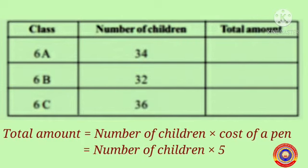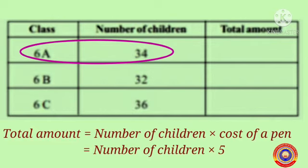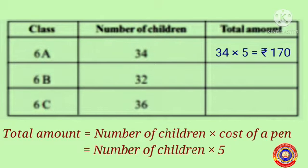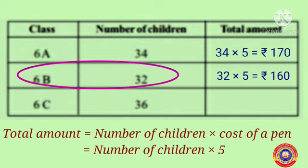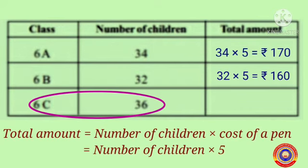Total amount = number of children × cost of a pen = number of children × 5. The number of children in 6A is 34, so the total amount paid by 6A = 34 × 5 = 170 rupees. In 6B, the number of children is 32, so the total amount = 32 × 5 = 160 rupees. In 6C, the number of children is 36, so the total amount = 36 × 5 = 180 rupees.